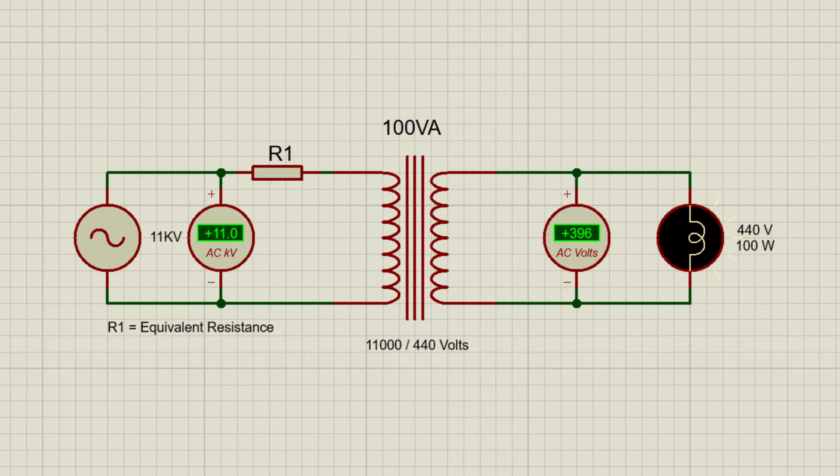So what is the percentage impedance of a transformer? It's a measure of the voltage drop that occurs when the transformer is fully loaded up to its rated secondary current. This voltage drop is due to the resistance and reactance of the transformer's winding.